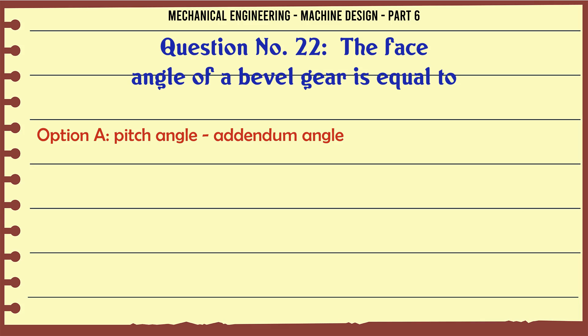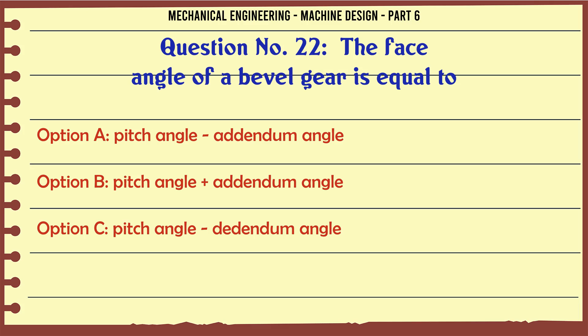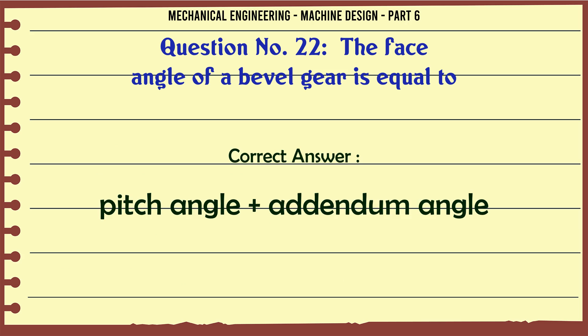The face angle of a bevel gear is equal to: A) pitch angle plus addendum angle, B) pitch angle minus addendum angle, C) pitch angle times addendum angle, D) pitch angle divided by addendum angle. The correct answer is pitch angle plus addendum angle.